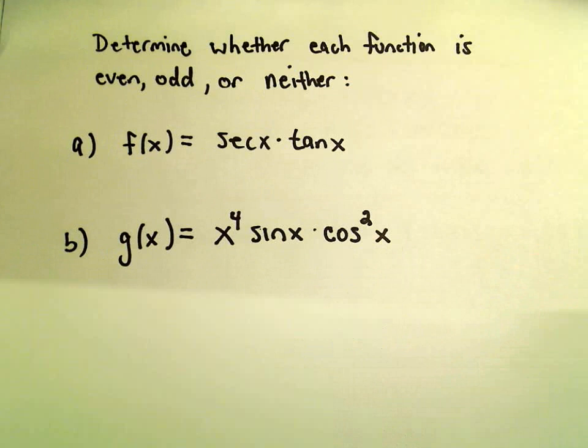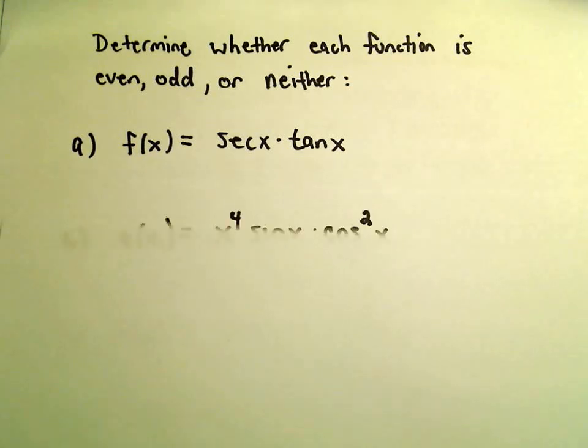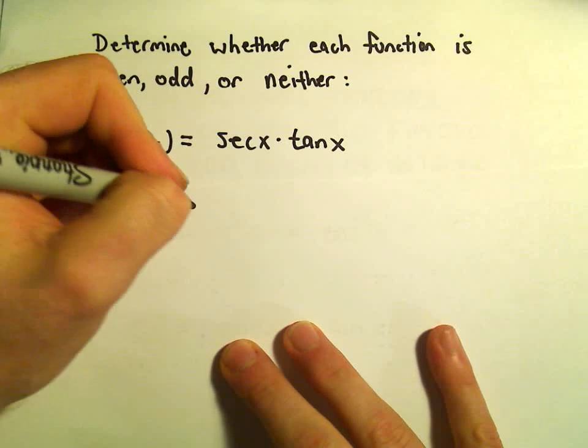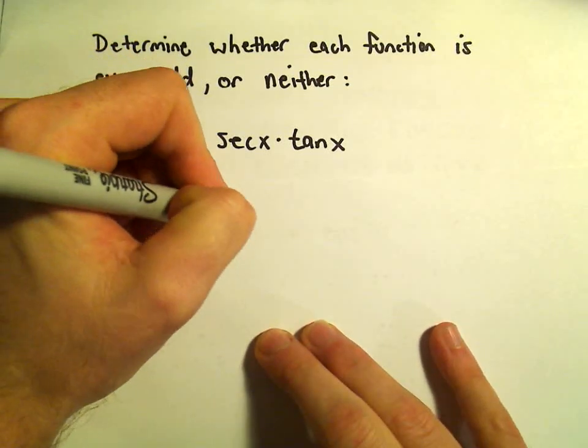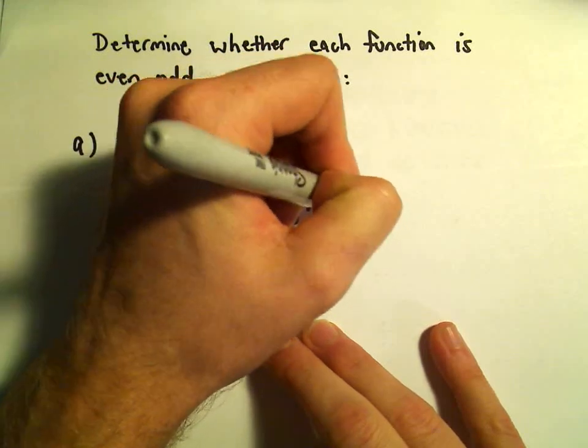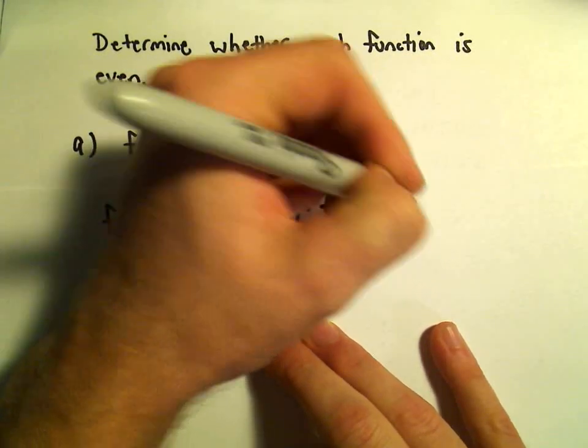Suppose we want to figure out if secant x times tangent x is even, odd, or neither. We're just going to use our definition and say we'll have to look at f of negative x. That's going to give us secant of negative x times tangent of negative x.